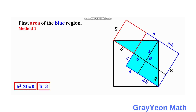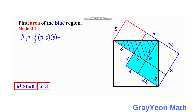Now for the final step, we find the area since we know the value of b. We will subdivide the blue region into portions. For the first shaded portion, the area is one half times the base, which is 5 plus 3 (equals 8), times the height which is 5. Then plus the second shaded portion: 8 minus b equals 8 minus 3 equals 5, so one half times base 5.